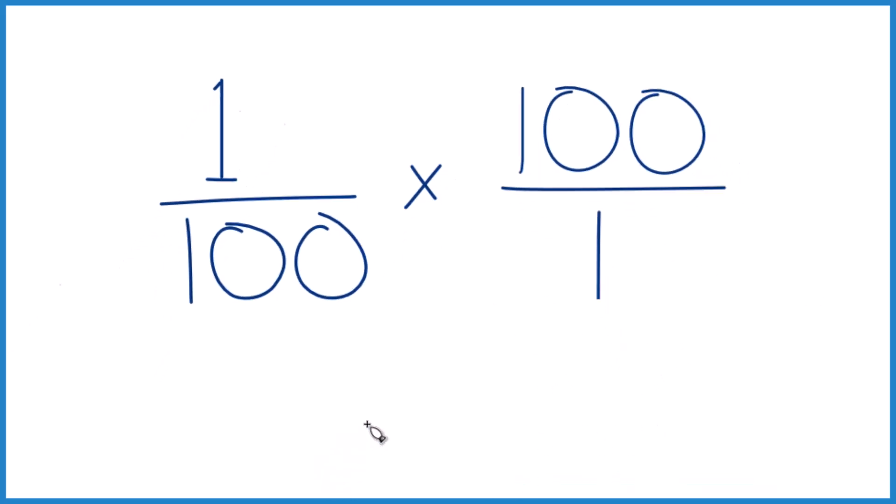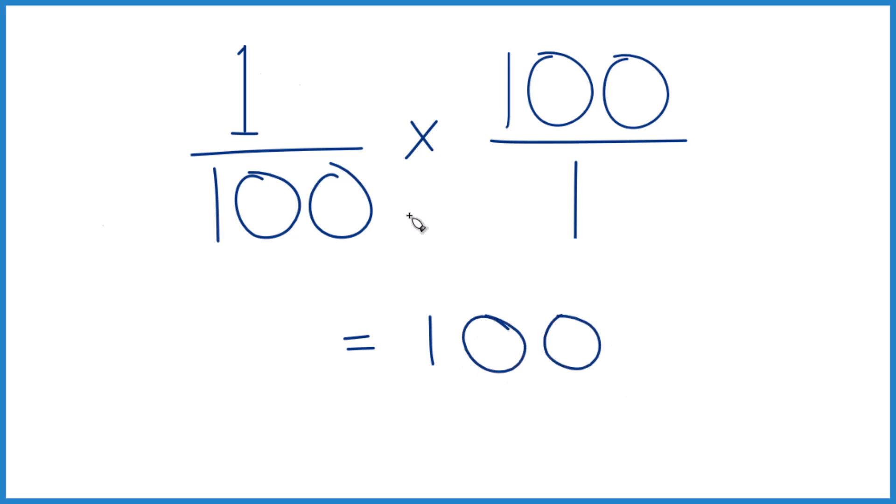1 times 100, that equals 100. And then 100 times 1, that equals 100. And 100 divided by 100, that equals 1, just like we found before.